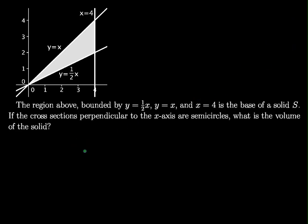Okay, the last round of examples, and this time we're using semicircles. The region above bounded by y equals one-half x and y equals x, and x equals 4, is the base of a solid S.